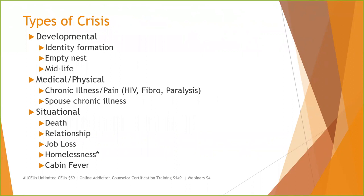Types of crises — and not every crisis for one person is going to be a crisis for another. Developmentally, identity formation is a crisis when people are in high school trying to figure out where they belong. With many people now having three or four careers, there's a repeating pattern of identity formation. The empty nest — if you're a parent and all of a sudden you don't have any kids at home, you have to redefine yourself. And then midlife — it's pretty natural to look back over your life and assess what you've accomplished.